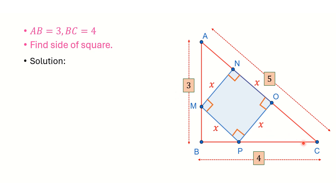Let us say angle OCP is alpha and the adjacent angle is beta. The angle on the straight line at that point is 90 degrees, because the sum of angles on a line is 180 degrees and the square angle is already 90. Looking at the triangle, alpha plus beta equals 90 degrees. Since the square angle is 90, the remaining angle in that triangle must be alpha.